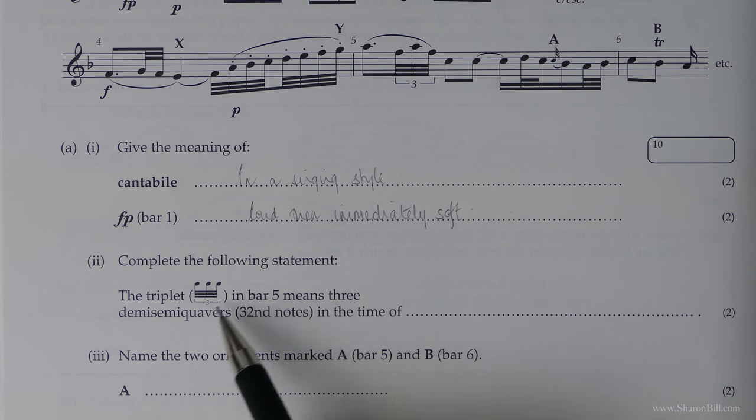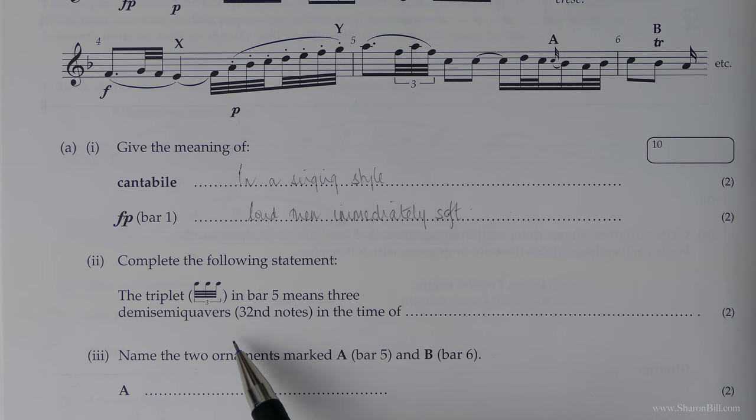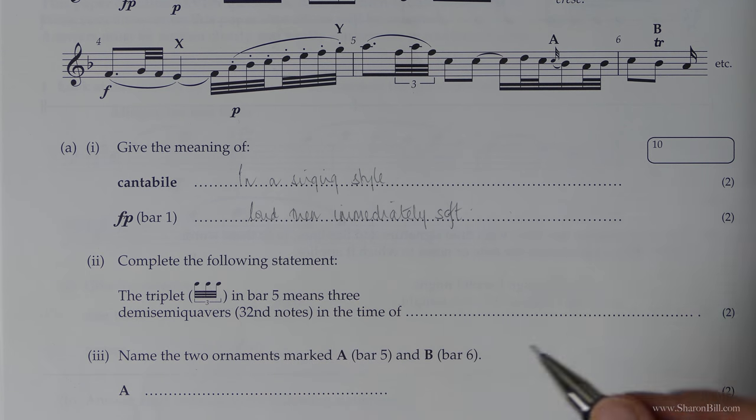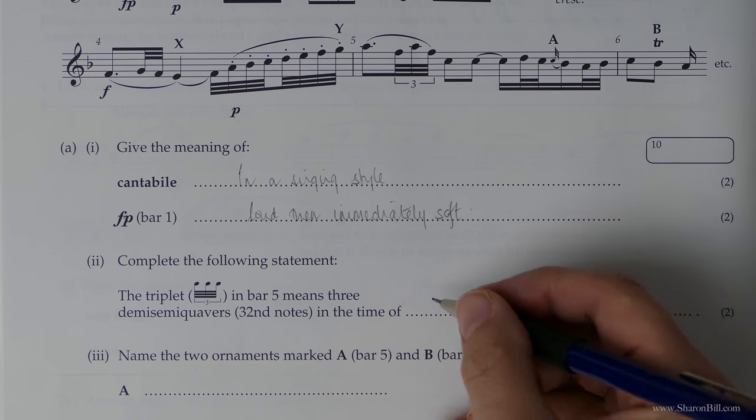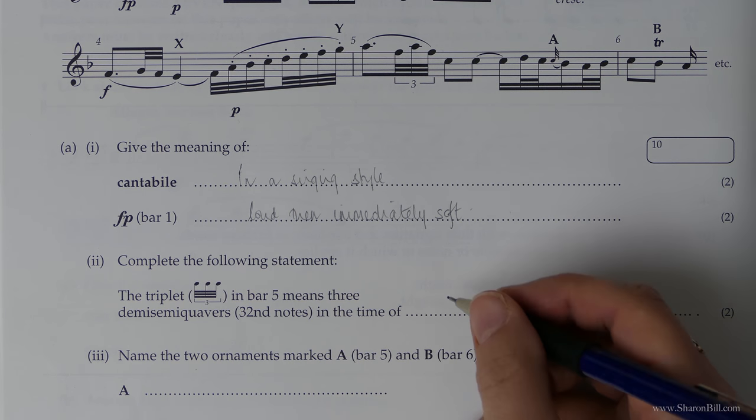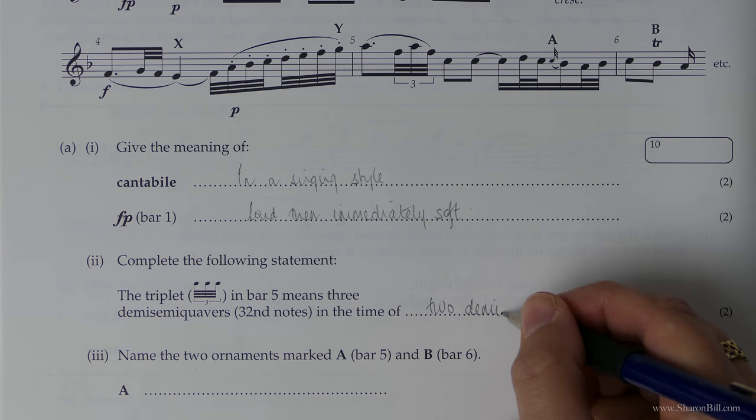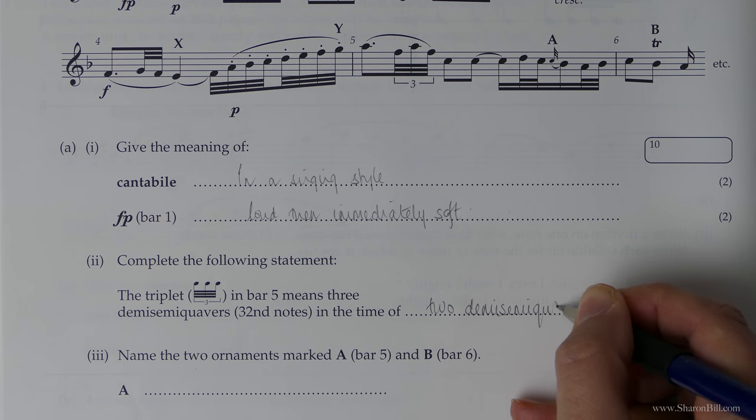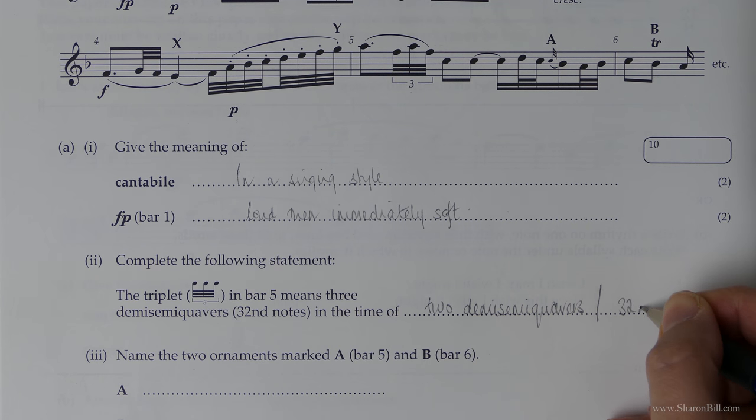Okay, let's see what the next one says. Complete the following statement. The triplet, which we see in bar 5, means 3 demisemiquavers in the time of. And it's always 3 in the time of 2 a triplet is. So just to be completely accurate, you'd say in the time of 2 demisemiquavers or 2 32nd notes.